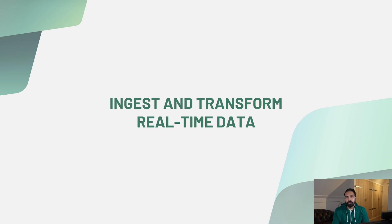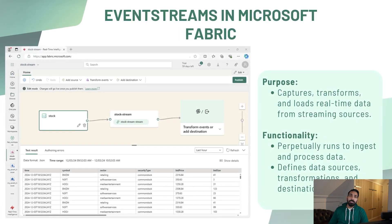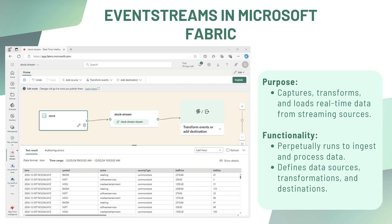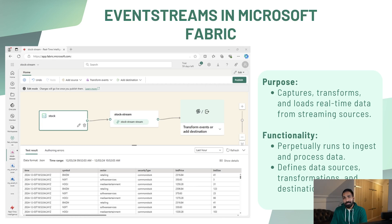Now let's talk about ingesting and transforming your real-time data. Real-time data may be different from what you want to see on dashboards, so we need to ingest and transform it. We can ingest into our Event House, but we may need to aggregate data — adding filters, feeds, and loading into tables. Using Event Streams in Microsoft Fabric, you can perpetually run to ingest and process data, define data sources, transformations, and destinations. We'll see this practically when we get sample stock data and load it into Event House.